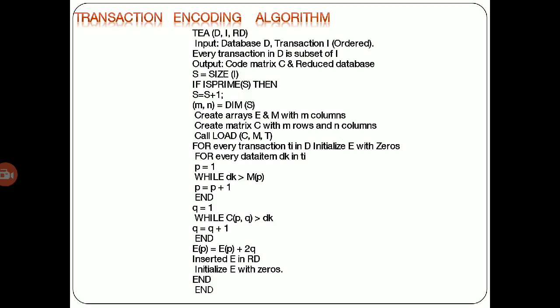Here, two to three conditions are internally checked by this TEA algorithm. In the first, it checks whether it is prime or not—that is, the size of the entire transaction record. If it is prime, then the value is adjusted accordingly.